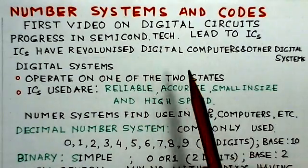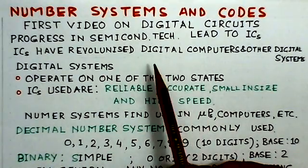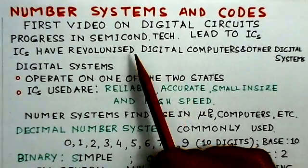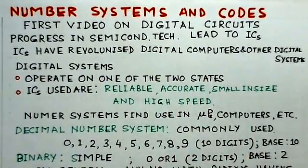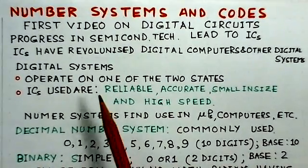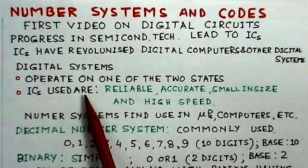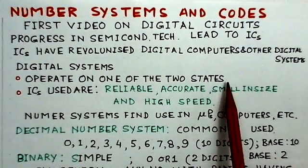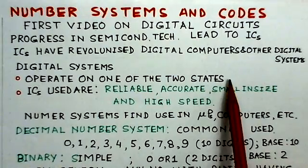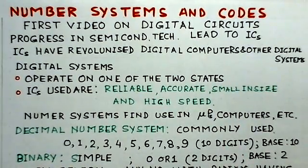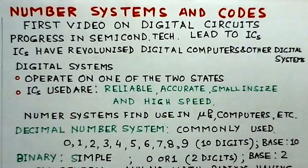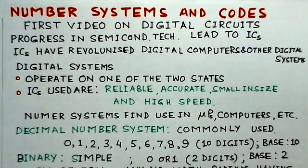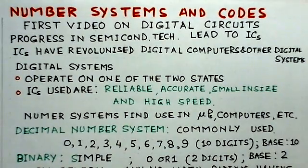Progress in semiconductor technology has led to the development of integrated circuits, which have revolutionized digital computers and other digital systems. Digital systems operate on one of two states — they operate on the binary system, that is, two states: on or off. The integrated circuits used in digital systems are more reliable, accurate, small in size, and high speed.